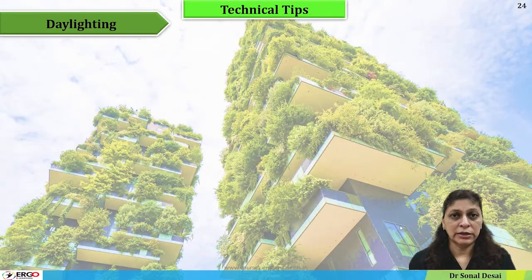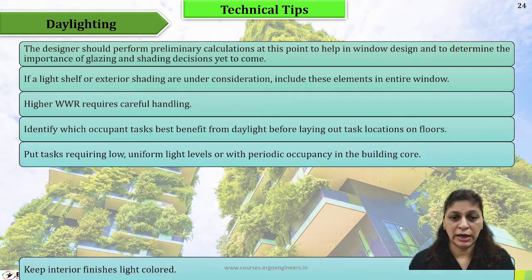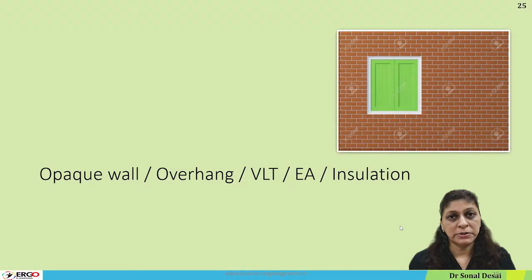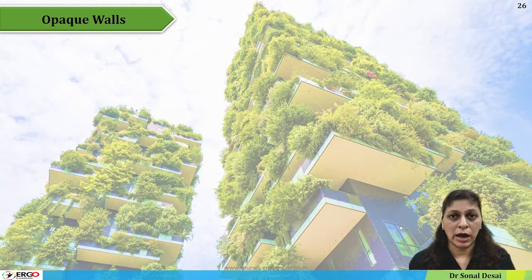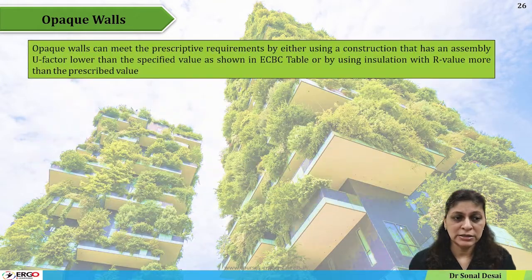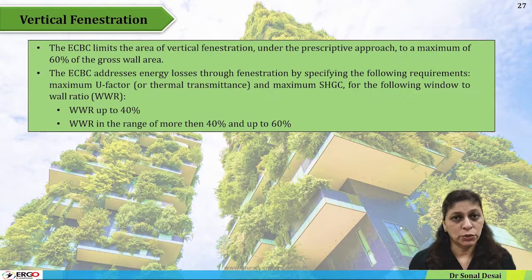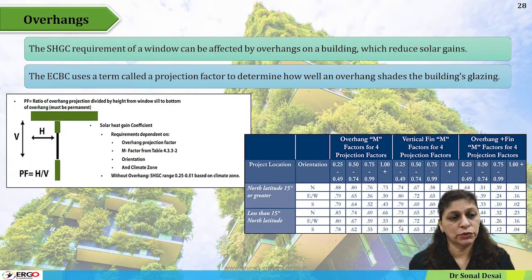As with other topics, there is a long list of technical tips that need to be considered while designing any building. Coming next are different topics related to building envelopes: how to select overhangs, what opaque walls are and their standards, what insulation is, and what effective aperture is. Compliance standards and limits for different compliance categories are mentioned, along with the overhang projection factor and how to calculate it.